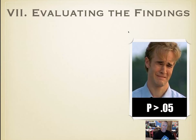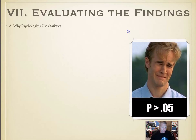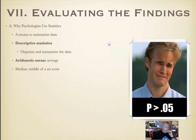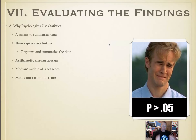We do an in-class demonstration of statistics where we make a human histogram based on height. Statistics are a means to summarize data. Descriptive statistics organize and summarize it. The arithmetic mean is simply the average — you add them all up and divide by how many. The median is the middle score — you find the range from lowest to highest and find the exact middle. The mode is the value that appears most often.